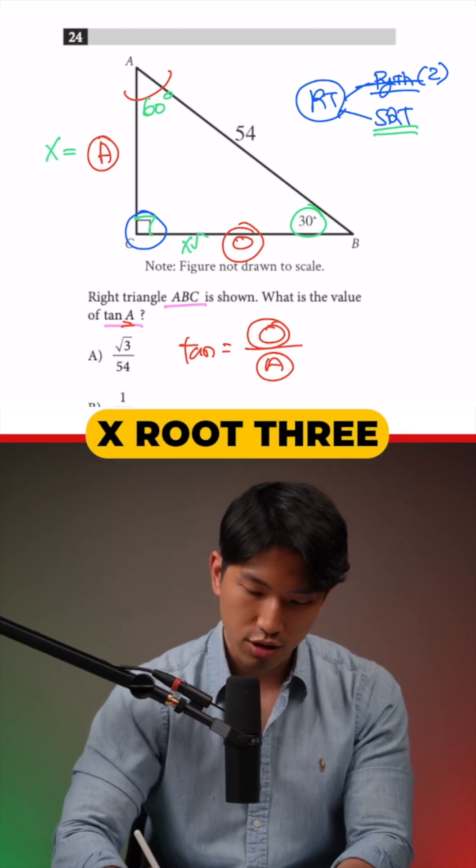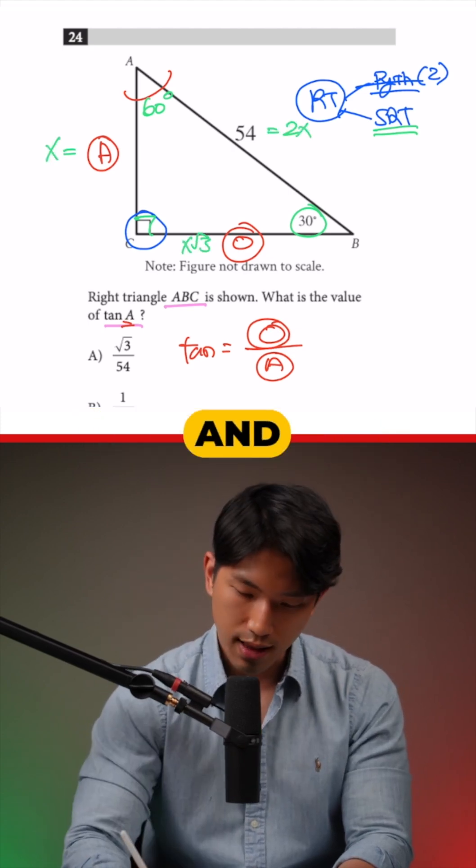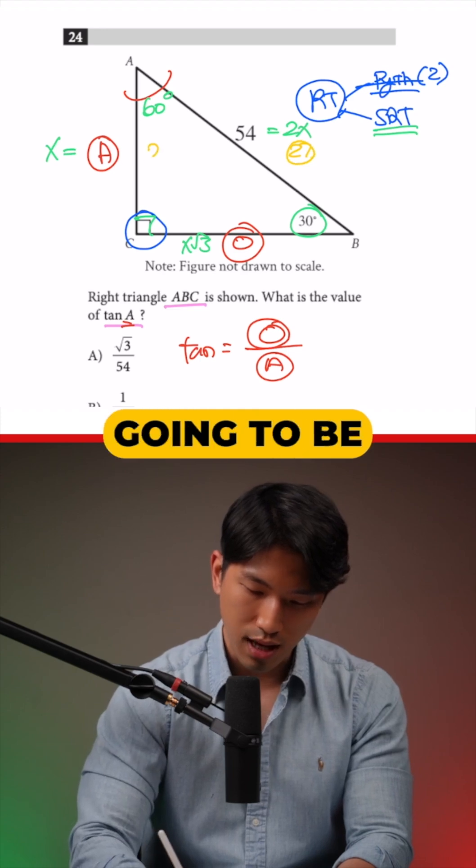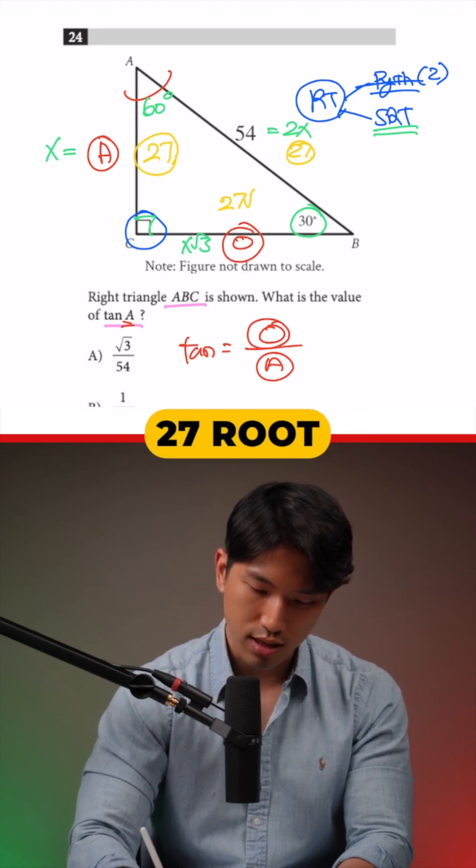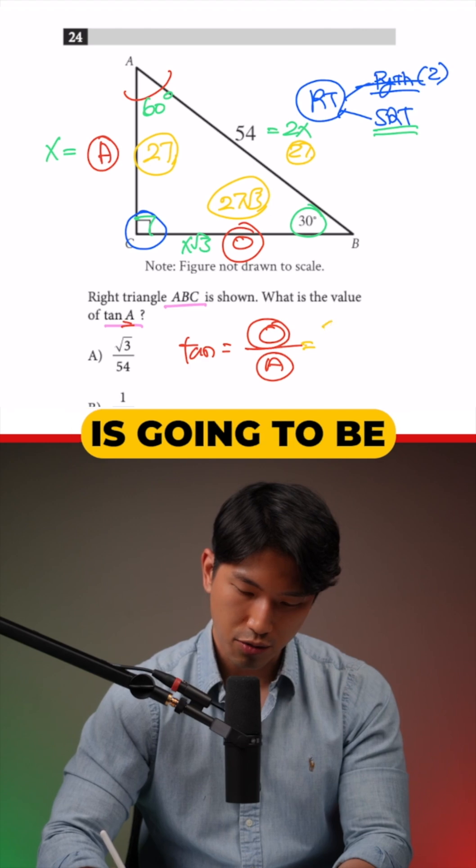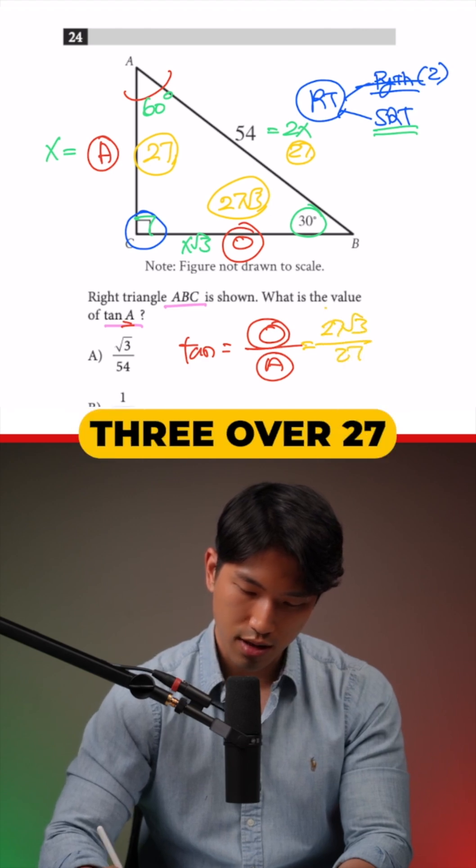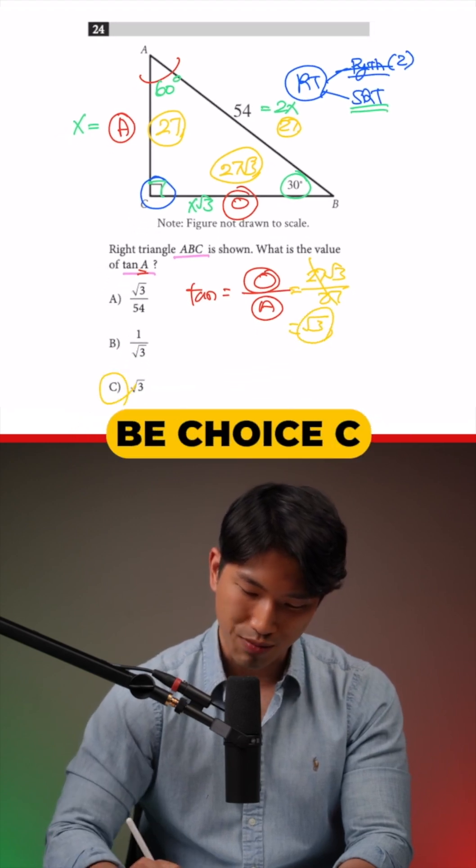We know the side length ratio is going to be X, X root 3, 2X for the hypotenuse. And that means X is 27. So it's going to be 27 for A and then 27 root 3 for O. So our answer is going to be 27 root 3 over 27. Cancel out, we get root 3. Our answer is going to be choice.